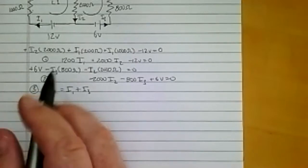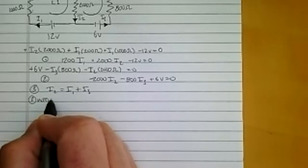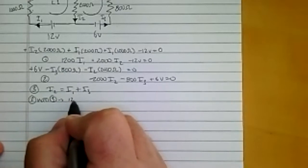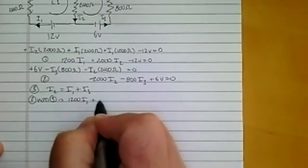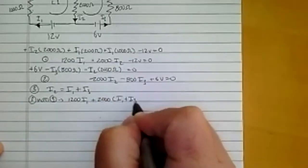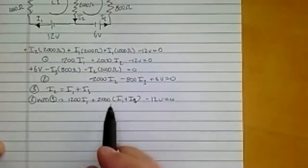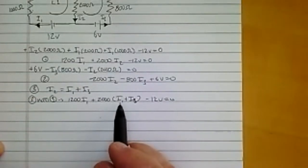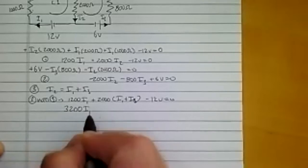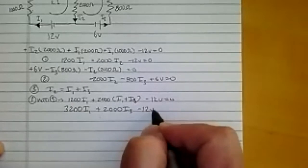So first off I'm going to plug in I2 is equal to I1 plus I3 for equation one. I'm going to plug three into one and when I do that I get 1200 I1 plus 2000 times, now instead of I2 I'm going to put I1 plus I3, minus 12 volts is equal to zero. Obviously I can simplify that a little bit. This 2000 is going to hit the I1 and become 2000 I1 plus 1200 I1 so I get 3200 I1 plus 2000 I3 minus 12 volts is equal to zero, and I'll call this equation four.